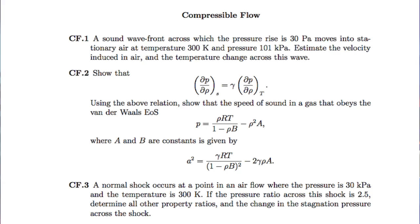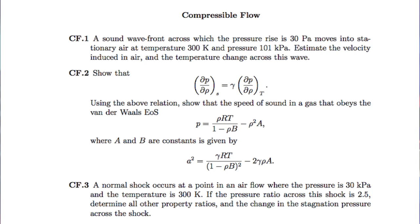We can look at problem number 1 in compressible flow, which is CF1. What is given here is that there is a sound wave front across which the pressure rise is 30 Pascal, and this sound wave front moves into stationary air which is at a temperature of 300 Kelvin and pressure of 101 kilo Pascal. We have to calculate the velocity induced in air and the temperature change across this wave.